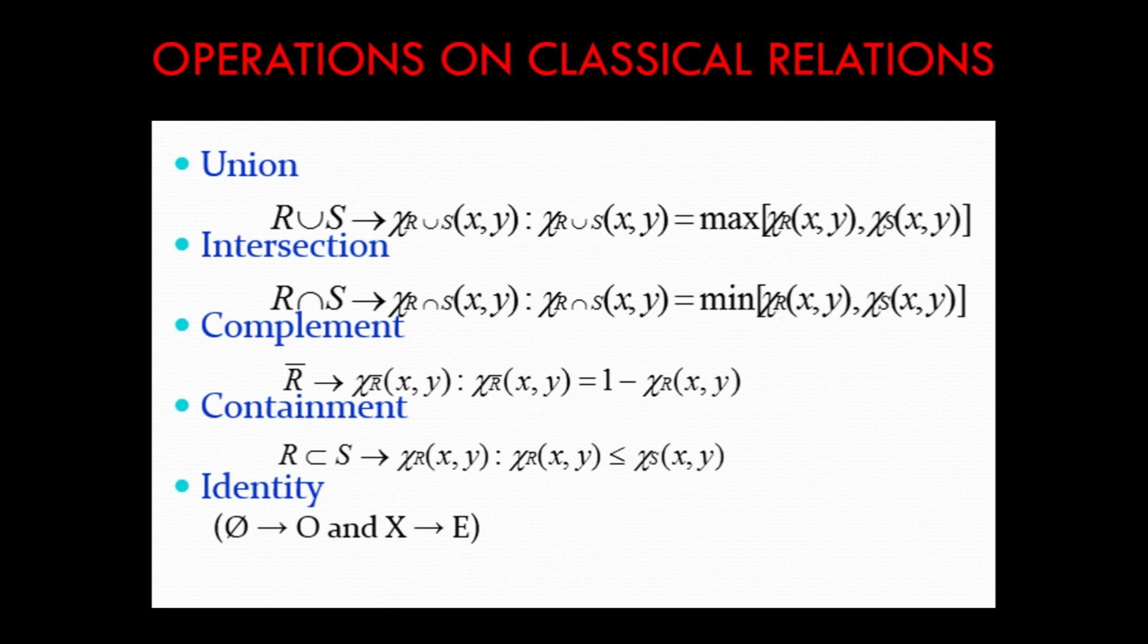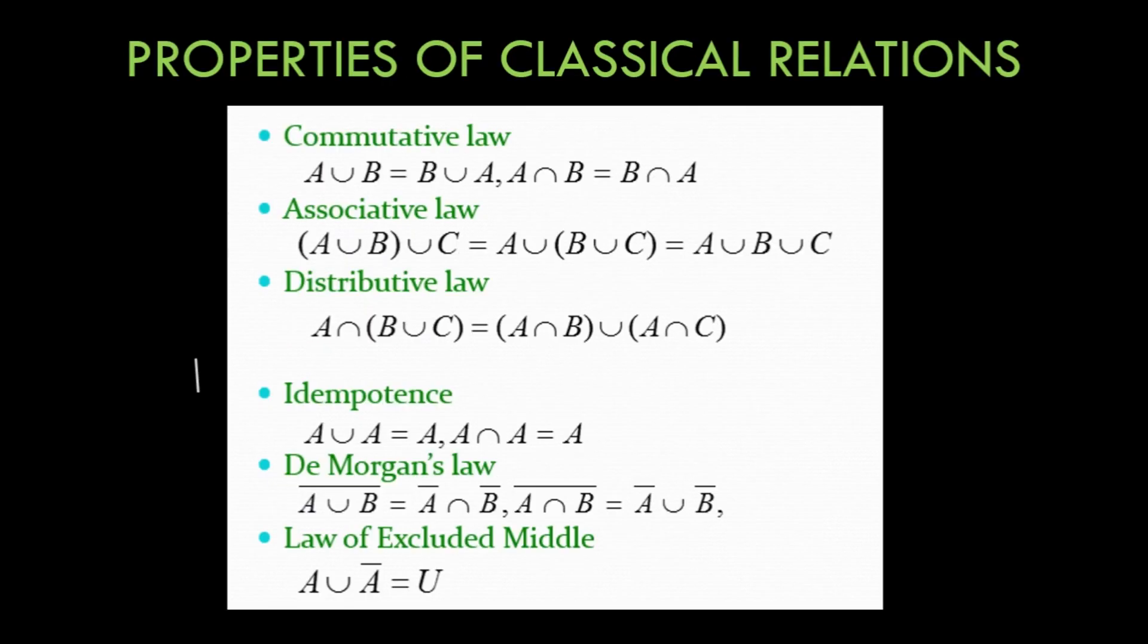Then we have complement, containment and identity. Similarly we have certain properties of classical relations and you must have seen all these laws in boolean algebra as well - commutative law, associative law. We are not going to solve any numericals on this but this is just the theoretical aspect.